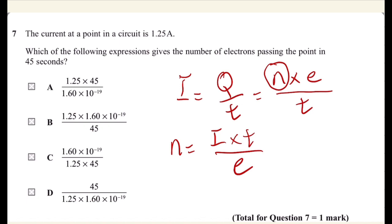Which is 1.6 times 10 power by minus 19. So in the denominator, I'm targeting this one, which is 1.6 times 10 power by minus 19.